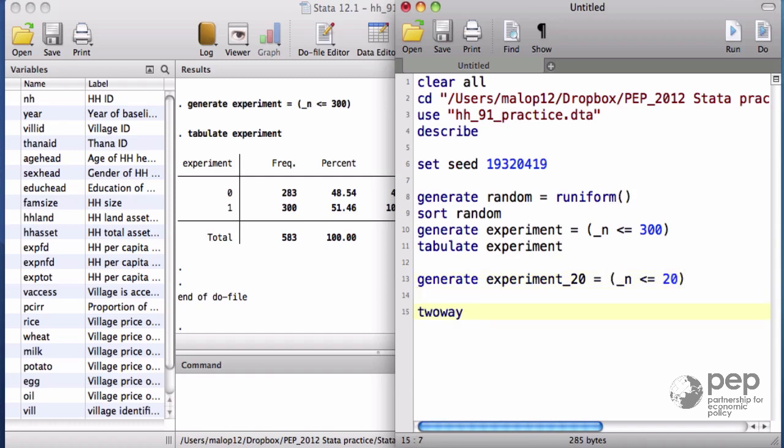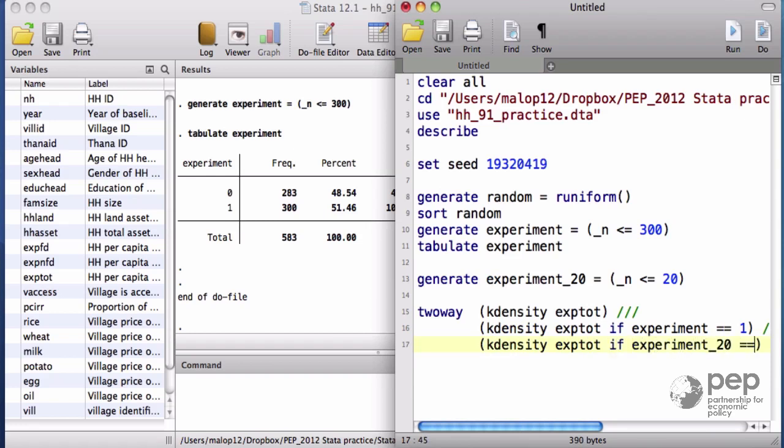Let me draw a graphic overlapping the density of household consumption in three different sets. The entire survey, all the observations that we have, the large experimental sample of 300 households, that's when the variable experiment equals 1, and the small experimental sample that we just created with 20 households. In order to recognize each plot, because we are going to have three densities in the same figure, I am also going to set the option legend and overwrite the default key. The first label is for the survey sample, the second label for the large experimental sample, and the third density is the small experimental sample.